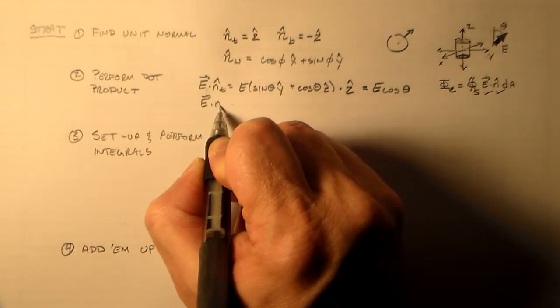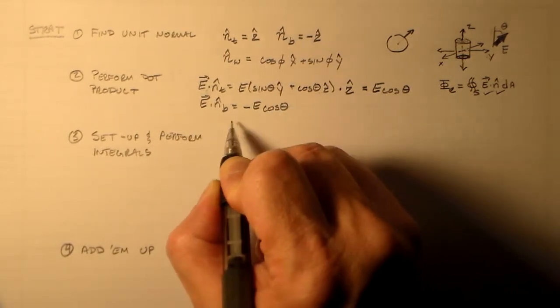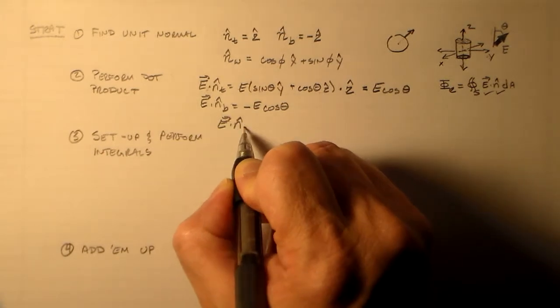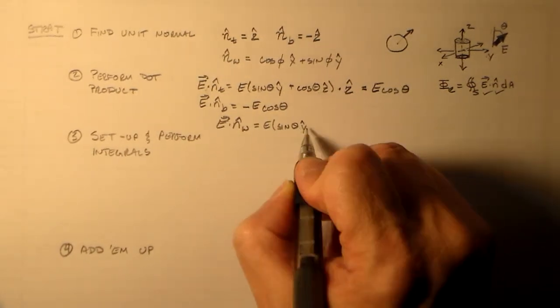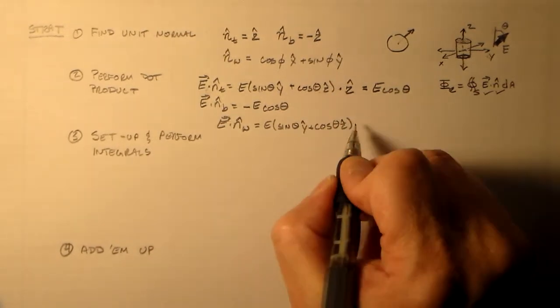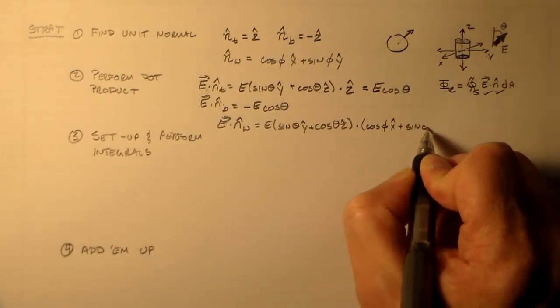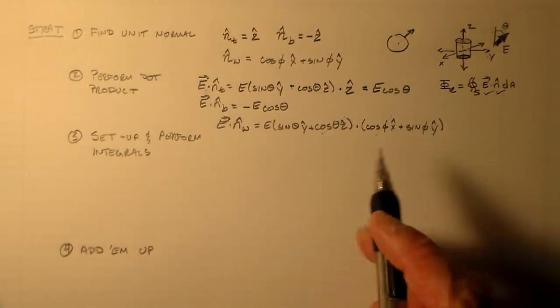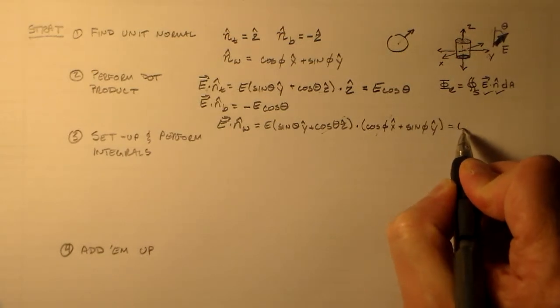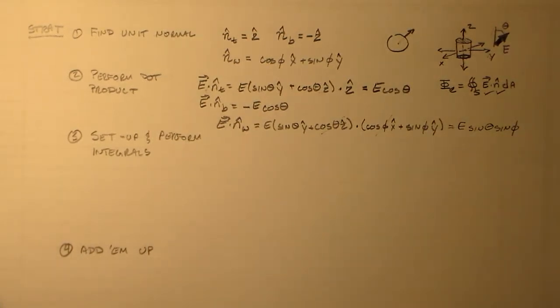And obviously, e dot n-hat b is absolutely no different, so we have minus e cosine theta, and then e dot n-hat w is a little more complicated, right? So we have e sine theta y-hat plus cosine theta z-hat dot cosine phi x-hat plus sine phi y-hat. And it turns out that this guy doesn't have any pair over here for the dot product, and this guy doesn't have a pair over there, so only the y-hat components are interesting. So that's e sine theta sine phi. We're not running into anything complicated, right? Everything makes sense. Everything's easy.